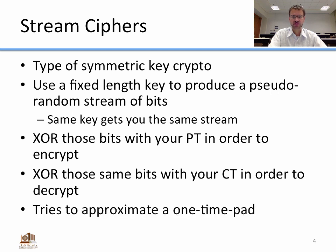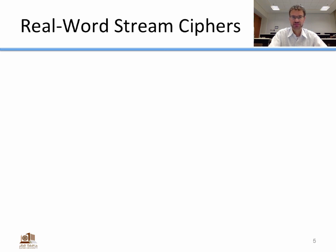The goal of a stream cipher is to approximate a one-time pad. A one-time pad is the only provably secure form of cryptography, where your key is just as long as your message. A stream cipher approximates that by using a much smaller key, which is then used to generate a very long stream of bits.